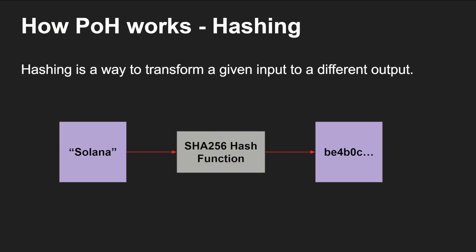Now we know what the purpose of proof of history is. Let's find out how proof of history works — specifically, how do we guarantee that the chain of blocks the leader generates is actually valid? To do that, we need to understand hashing. Hashing is a way to transform any given input to a different output. If we're given the word 'Solana' and give it to a hash function, it generates a specific string. There are two important properties of hash functions: the same input will always generate the same output, and the output is always a randomly distributed string value that can't be predicted. For example, 'Solana1' would produce a completely different output than 'Solana'. The chance of two separate inputs having the same output is infinitesimally small.